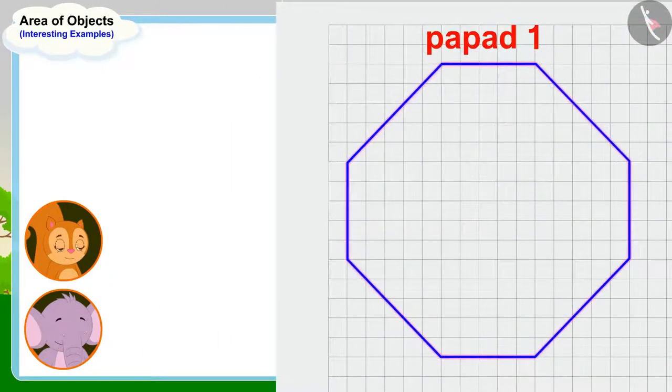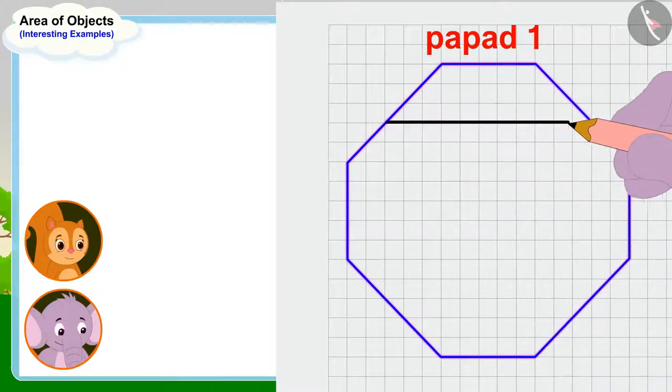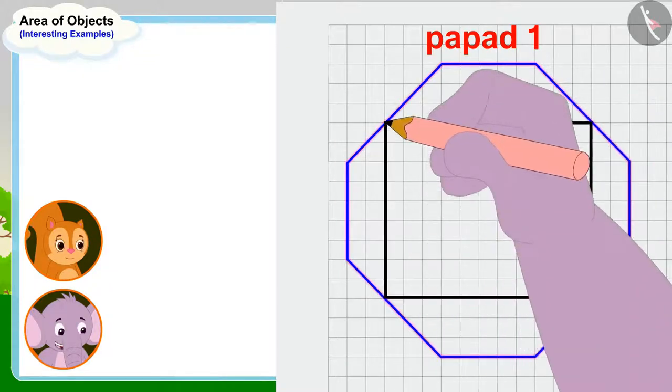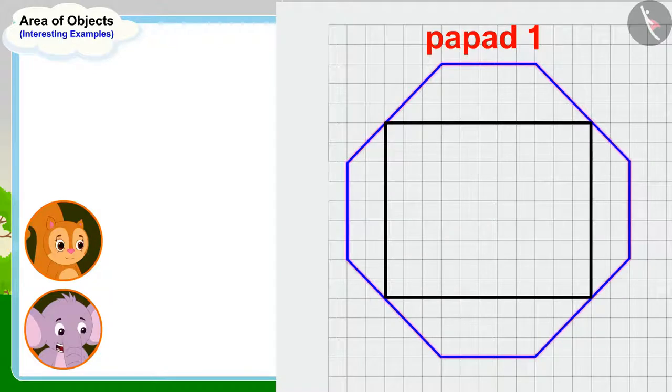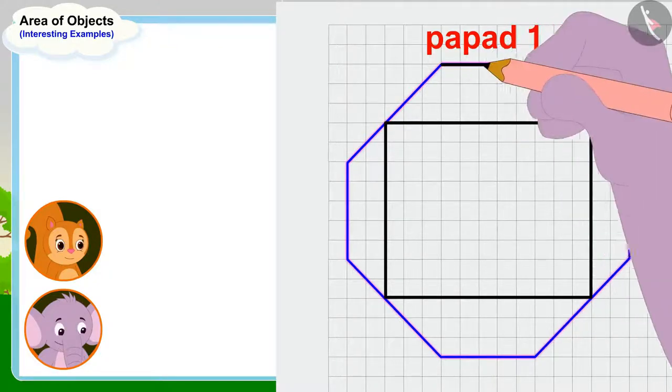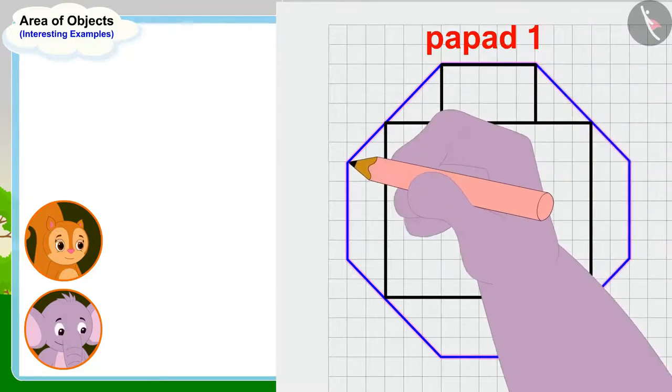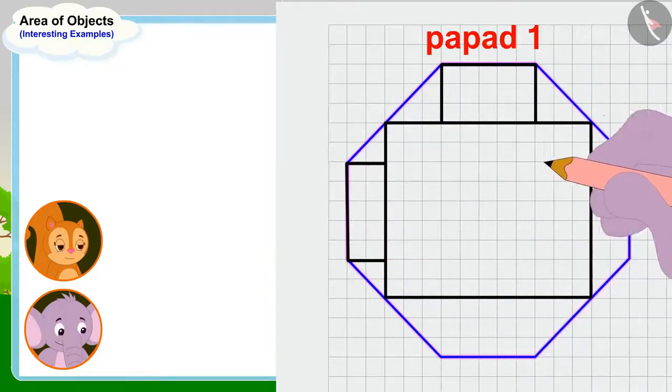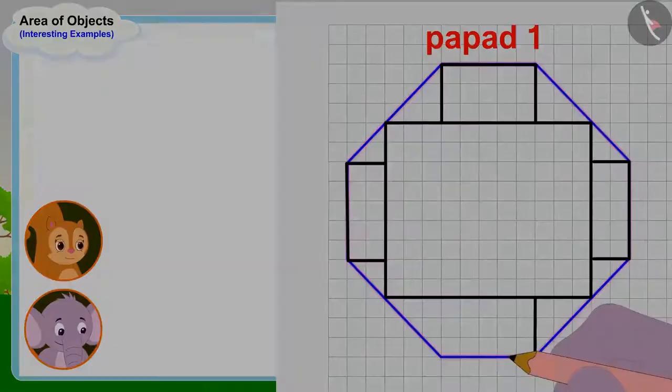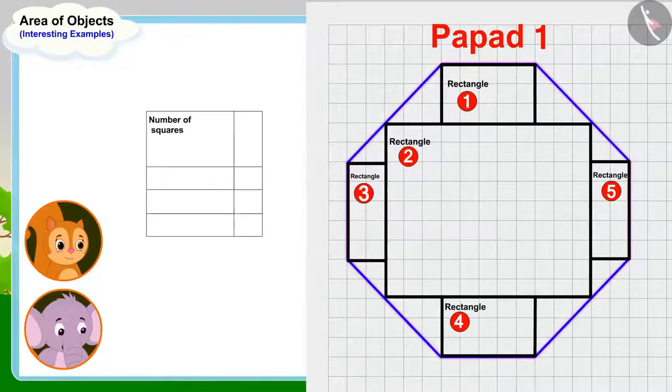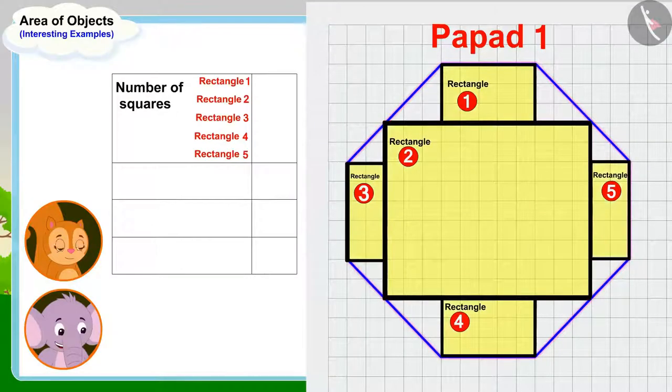Let's first find the area of this shaped papar. Let me first draw this rectangle in this shape here so that I can find it easy to find the area. Appu made a rectangle like this in the shape of the first papar. Now, I will write down the number of squares that fall into these rectangles.